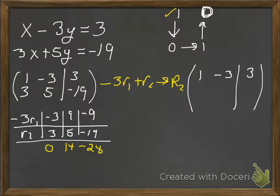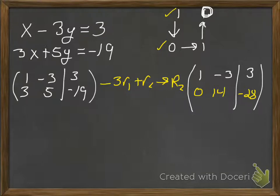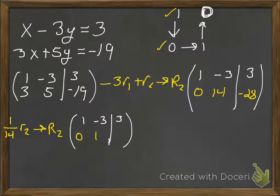We'll write the top row in white because it's unchanged, and the bottom row in yellow to indicate it's changed. We are halfway there. The next thing is to make this a 1. To make a 1, we multiply by the reciprocal — the reciprocal of 14 is 1 over 14. So we multiply row 2 by 1/14, replacing row 2. A 14th of 0 is 0, a 14th of 14 is 1, and a 14th of negative 28 is negative 2.